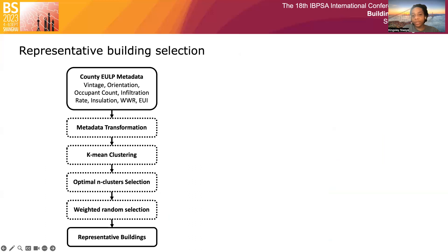Specific to our application, we follow a procedure that uses a combination of data-driven methods and random selection to identify representative buildings and thermostat set-point schedules. Representative building groups are determined by upstream metadata fields including building year of construction, orientation, occupant counts, infiltration rates, ceiling, slab and wall insulation levels, window-to-wall ratio, and energy use intensity using the k-means algorithm.